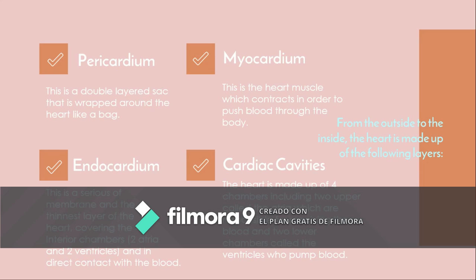At last, we have the cardiac cavities. The heart is made up of four chambers, including two upper chambers called the atria, which are responsible for receiving the blood, and two lower chambers called the ventricles, which pump blood.